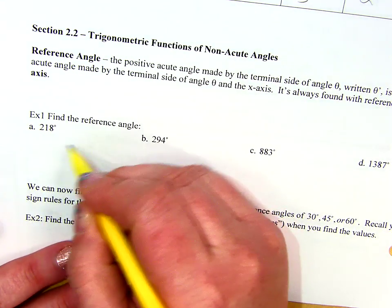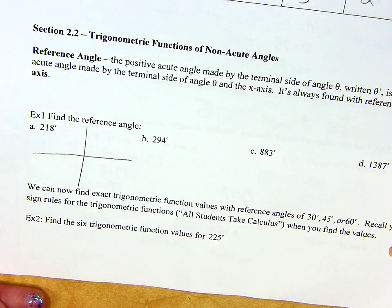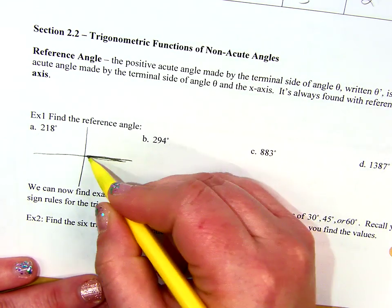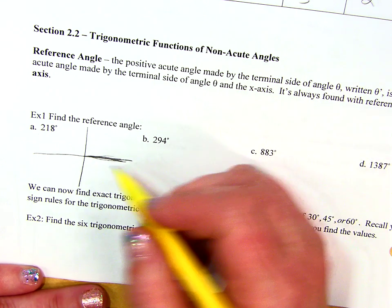So here's all we've got to do. If we're looking at the first example, 218 degrees, right? So remember, I always start here at 0 degrees, and then if I'm going to draw a 218 degree angle, what quadrant does it land in?